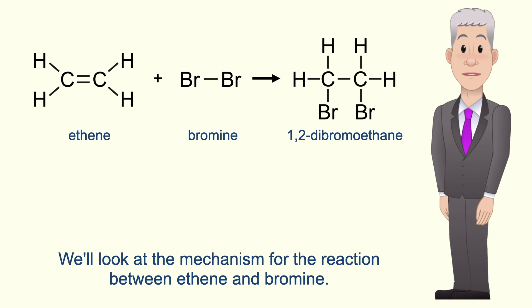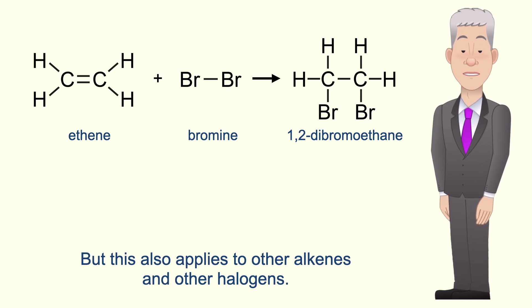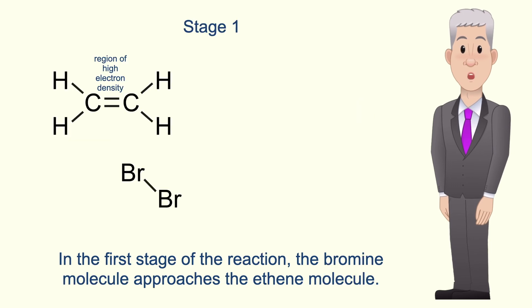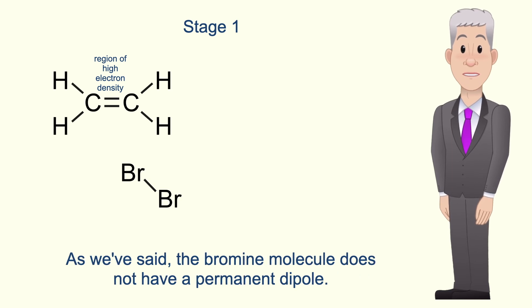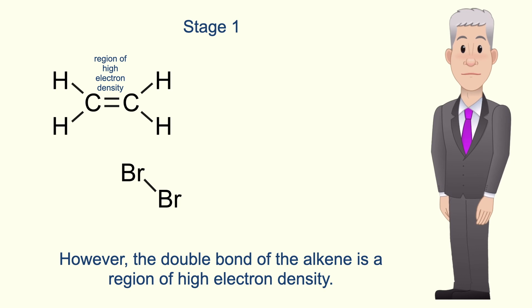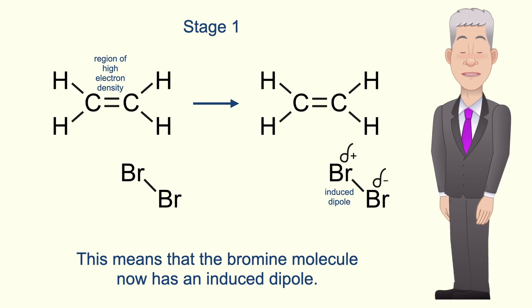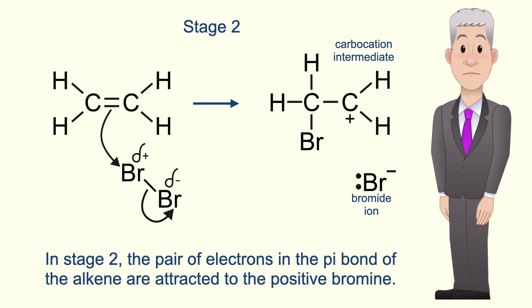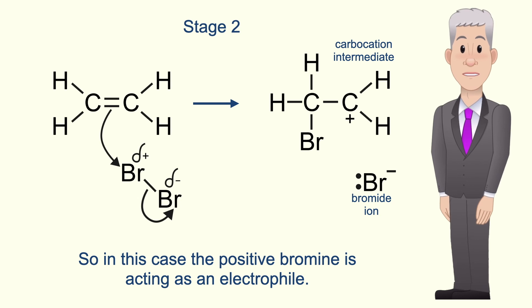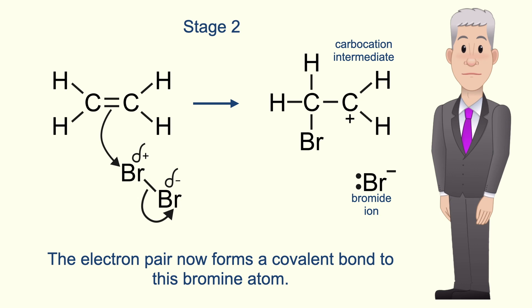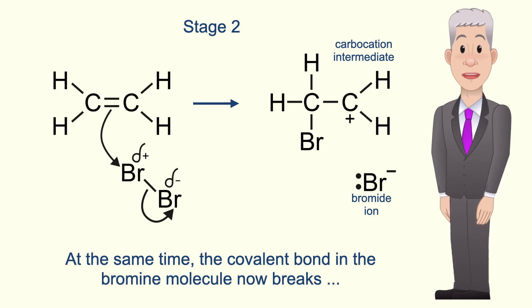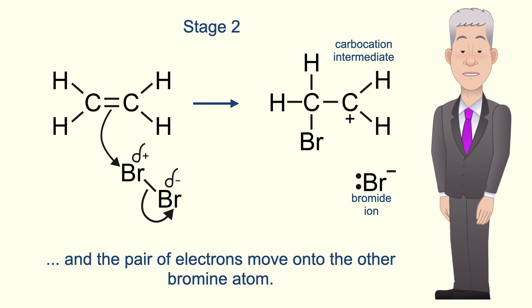We look at the mechanism for the reaction between ethene and bromine, but this also applies to other alkenes and other halogens. In the first stage, the bromine molecule approaches the ethene molecule. The bromine molecule does not have a permanent dipole; however, the double bond of the alkene is a region of high electron density, and this high electron density repels the electron pair of the covalent bond in the bromine molecule, meaning the bromine molecule now has an induced dipole. In stage two, the pair of electrons in the pi bond of the alkene are attracted to the positive bromine, so the positive bromine is acting as an electrophile. The electron pair now forms a covalent bond to this bromine atom. At the same time, the covalent bond in the bromine molecule breaks and the pair of electrons move on to the other bromine atom.